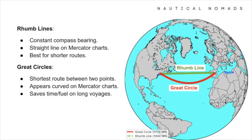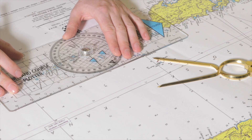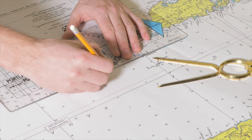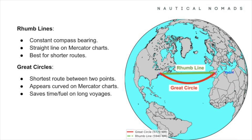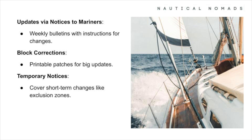When navigating, two key types of lines are commonly used: rhumb lines and great circles. A rhumb line maintains a constant compass bearing and appears as a straight line on Mercator charts, making it easy to plot shorter courses. A great circle is the shortest route between two points on a sphere. While it appears curved on a Mercator chart, it saves time and fuel over long distances, making it the preferred choice for trans-oceanic voyages.